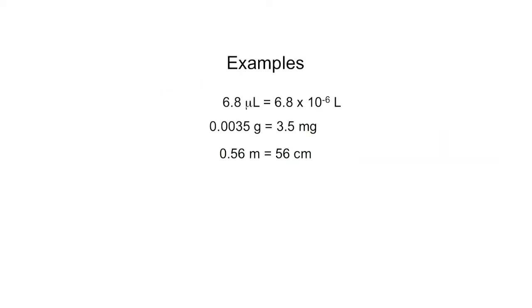In the same way, 0.56 meters can be written as 56 times ten to the minus two meters. And because ten to the minus two means centi, this number can be written as 56 centimeters. 0.0067 liters can be written as 6.7 times ten to the minus three liters, and ten to the minus three liters is a milliliter, so this is 6.7 milliliters.